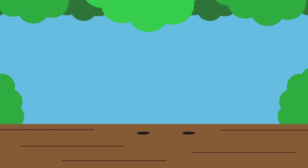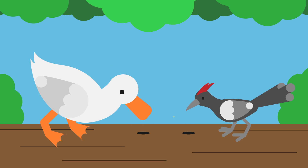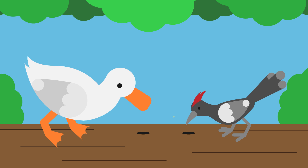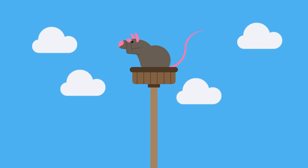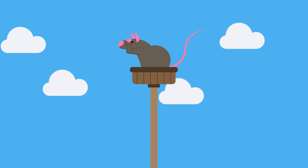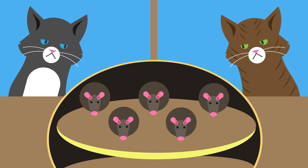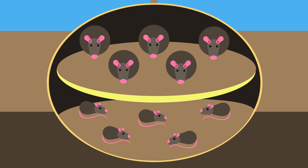This means that some individuals are better adapted to their environment than others, allowing natural selection to take place. For example, in a population of rats, some will have better eyesight than others. These will be able to avoid being eaten by predators, so are more likely to survive to reproduce and pass on this advantage to their offspring.